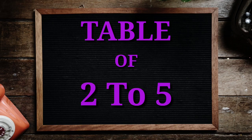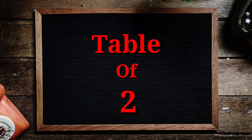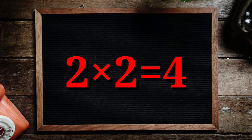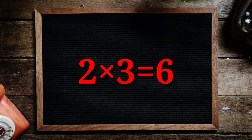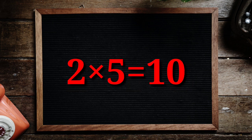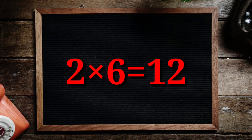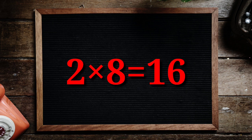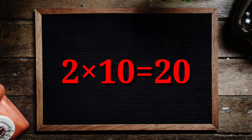Table of 2 to 5. Table of 2: 2 1's are 2, 2 2's are 4, 2 3's are 6, 2 4's are 8, 2 5's are 10, 2 6's are 12, 2 7's are 14, 2 8's are 16, 2 9's are 18, 2 10's are 20.